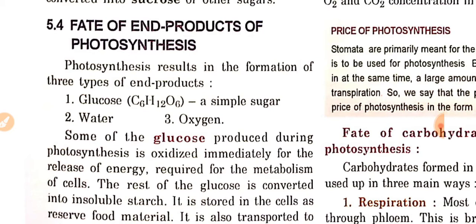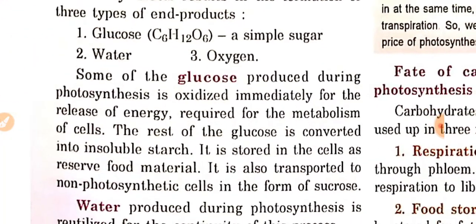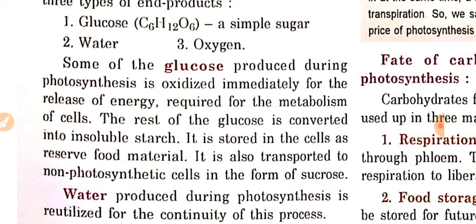So what are the end products of photosynthesis? I hope you already know that photosynthesis results in the formation of three types of end products. First is the main product for plants — glucose or simple sugar. Next is water, and the very precious element, oxygen. Some of the glucose produced during photosynthesis is oxidized immediately for the release of energy required for the metabolism of cells.